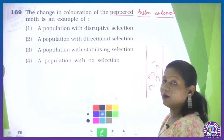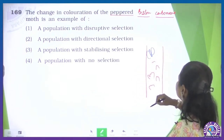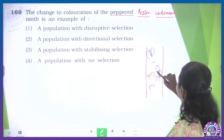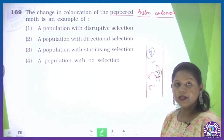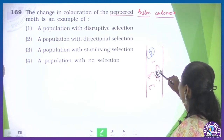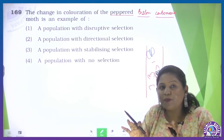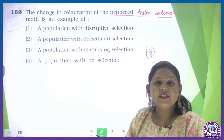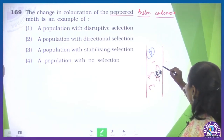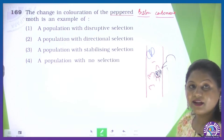Two moths inhabited there — one was white-colored and the other was black. The melanized (black-colored) moth became distinct, while the white-colored moth camouflaged with the white background. Predators such as birds would feed on the black-colored moth because it was clearly visible.